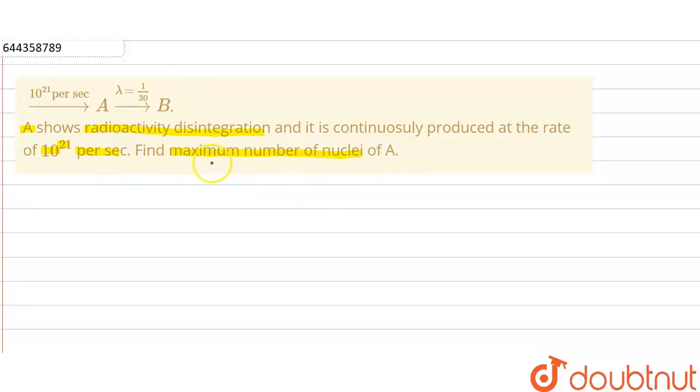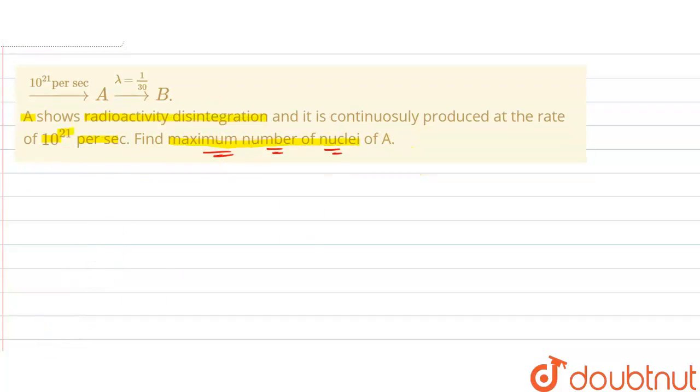In this question, we have to find the maximum number of nuclei of A. First, we will write down what we have been given. A is produced at the rate of 10^21 per second, which gives B, and lambda equals 1/30.